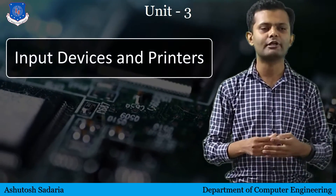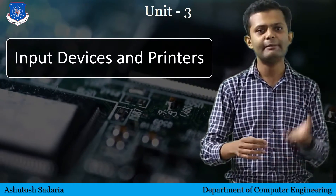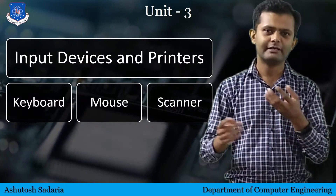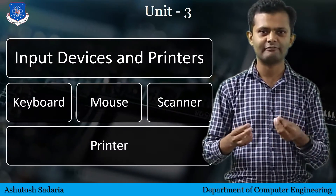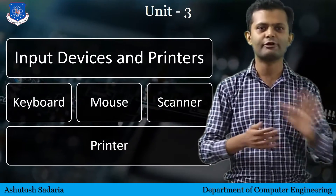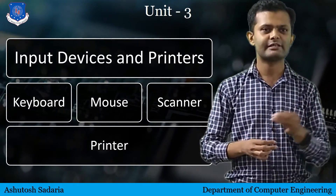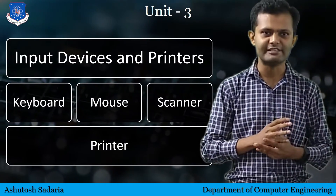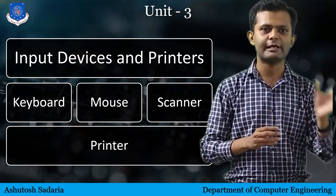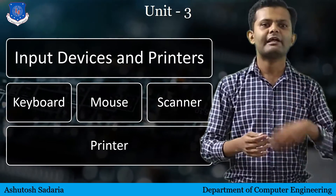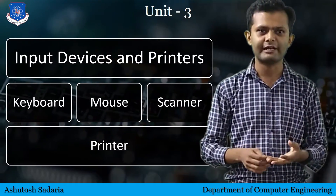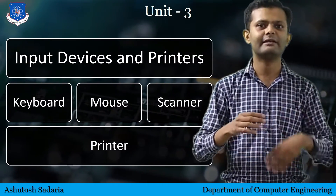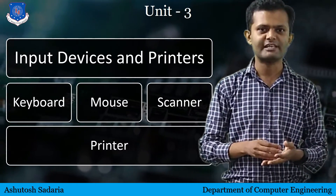In the third unit, we are going to learn about Input Devices and Printer. The Input Devices include Keyboard, Mouse, Scanner, and one other device called Printer. The Printer is not an Input Device, but it is in our curriculum of Unit 3 along with Input Devices. So the third unit is Input Devices and Printer. We are going to learn about the internal structure of Keyboard, Mouse, Scanner, and also Printer.